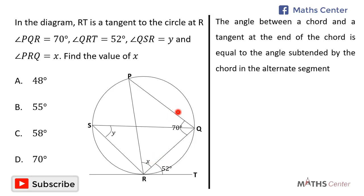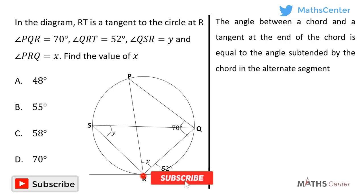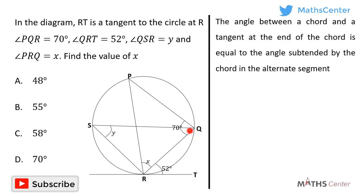We will use the alternate segment theorem: in a circle, the angle between a chord and a tangent at the end of the chord is equal to the angle subtended by the chord in the alternate segment. On this diagram, we have the tangent RT and the chord RQ. The angle formed between the tangent RT and the chord RQ is angle QRT, which is 52 degrees.